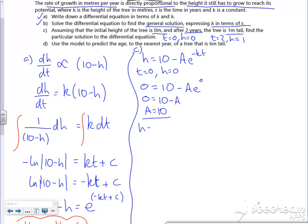So h = 10 - 10e^(-kt). Now using t=2, h=1.